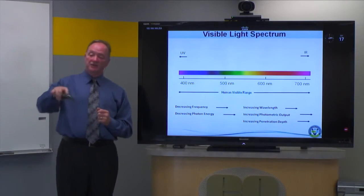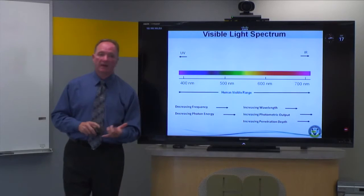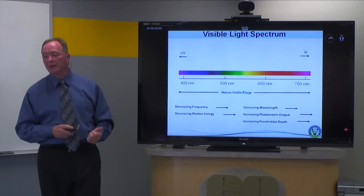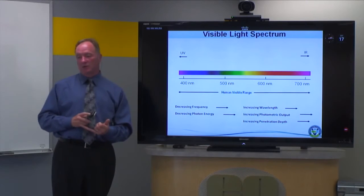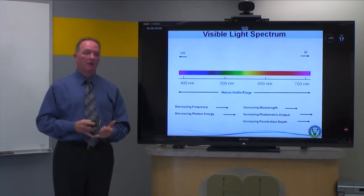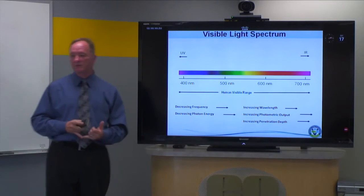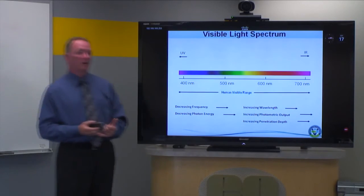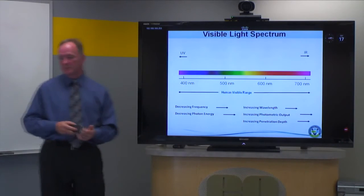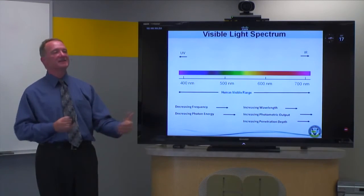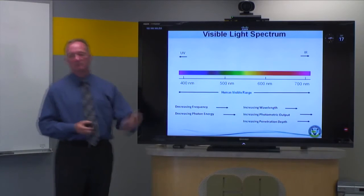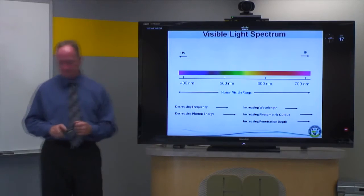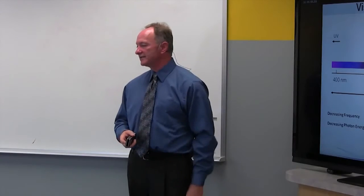We'll take advantage of some features of IR light, particularly increasing photometric output and penetration depth — though this is mostly part of the advanced course. The longer the wavelength, the better the light tends to penetrate, which has a positive effect on samples that are semi-transparent or transparent. You can take advantage of that and blast light right through them.